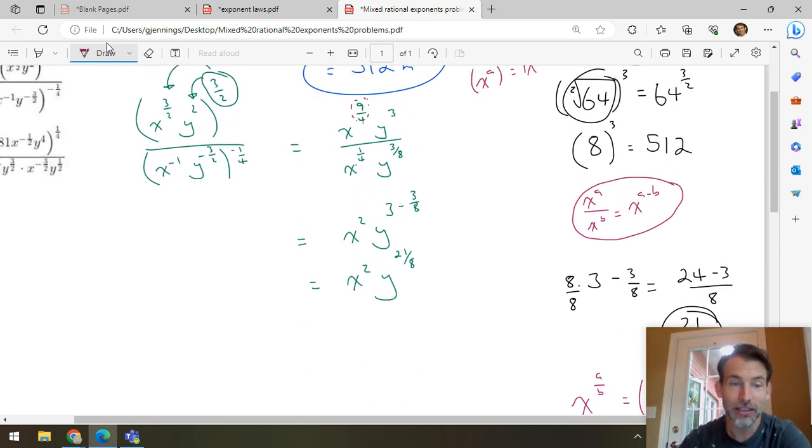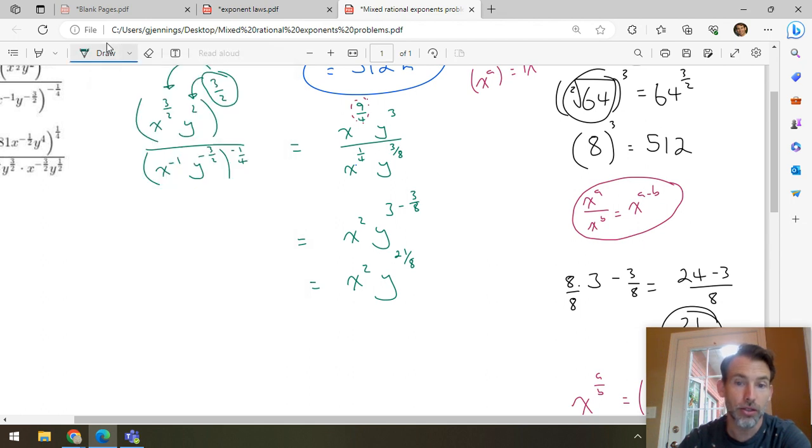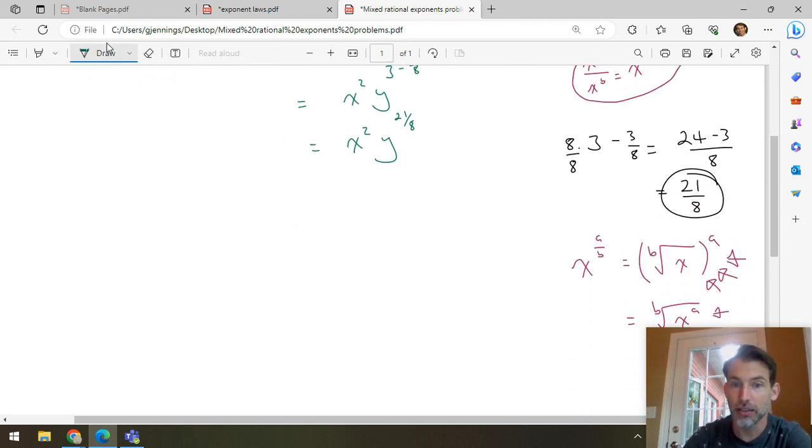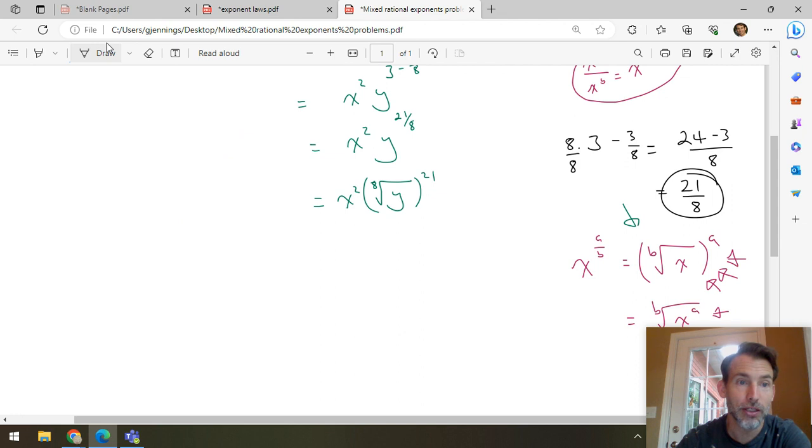So, now we want to write that, but convert it to mixed radical form. So, I consult my little cheat sheet that I made for myself down here. And so, I say this is still equal to x squared. That's just x squared. We don't need mixed radicals or nothing. But then this is the eighth root of y to the 21. Done. Final answer.